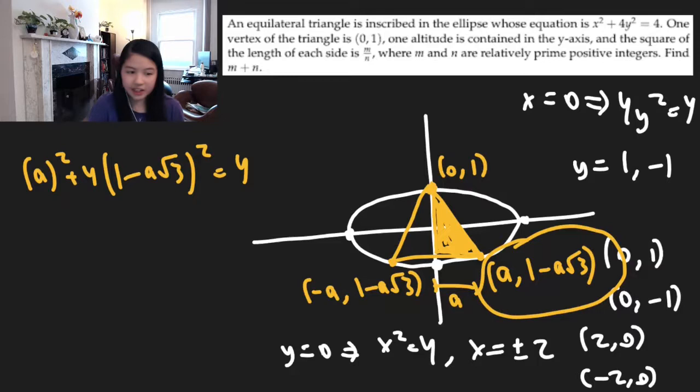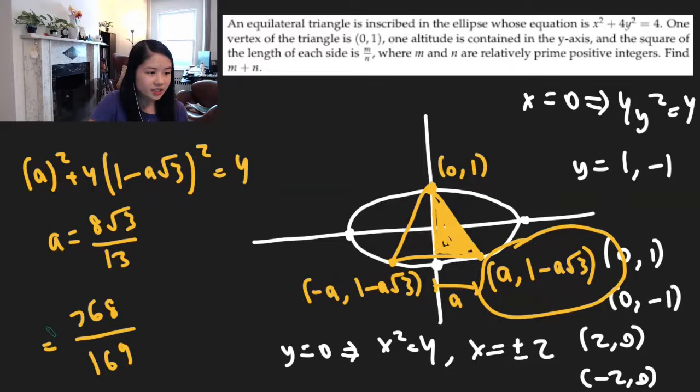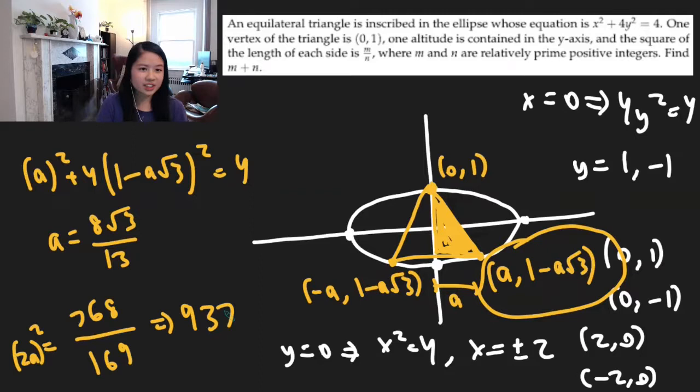The value of a turns out to be 8√3/13. To finish the problem, the answer is the square of 2a, which equals 768/169. So the final answer is 937 — it's just a matter of finding where to draw the triangle, then the rest is easy algebra.